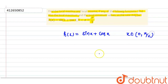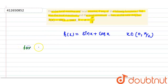So x will come to the first quadrant. Whatever x comes will be in the first quadrant. So what do we do? We will find the critical points. First, we will find the critical points.